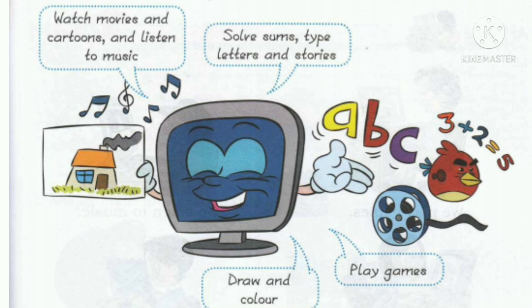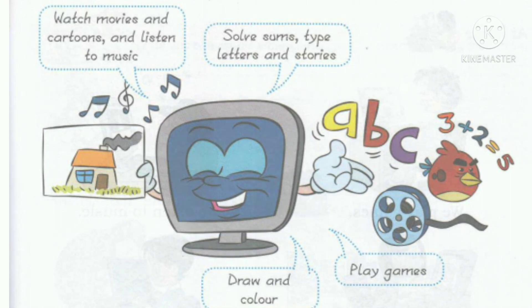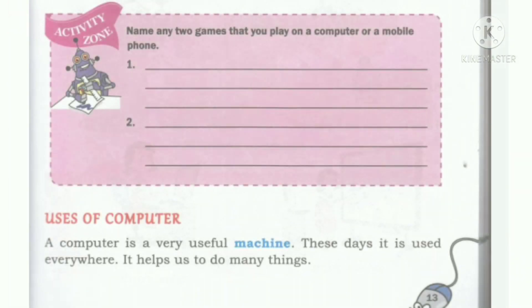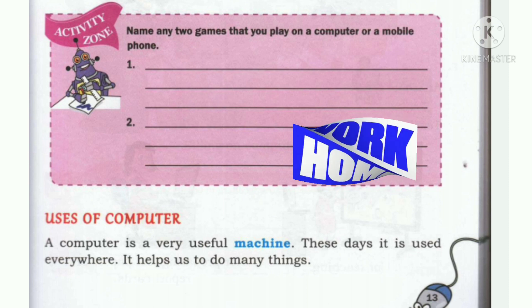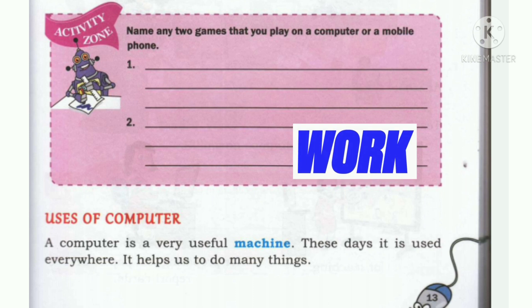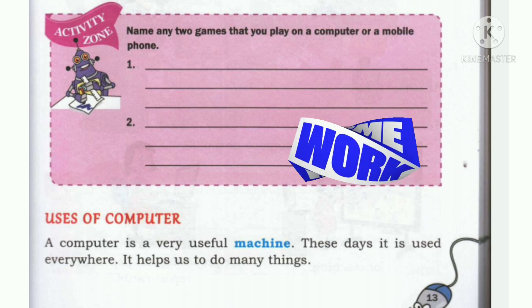So children, computer is really an amazing machine, am I right? Now, here is one activity given: Name any two games that you play on a computer or a mobile phone.